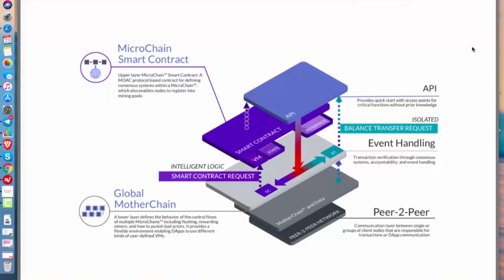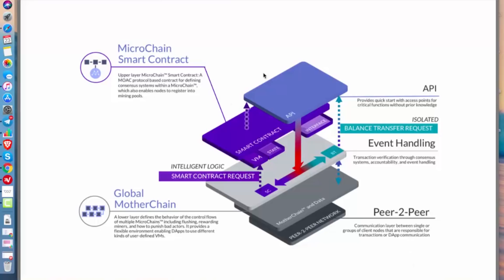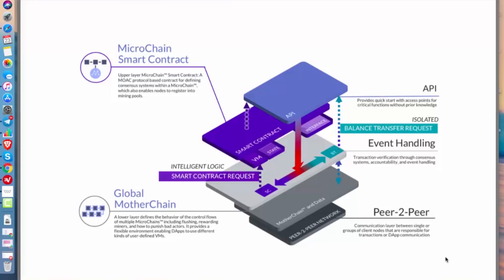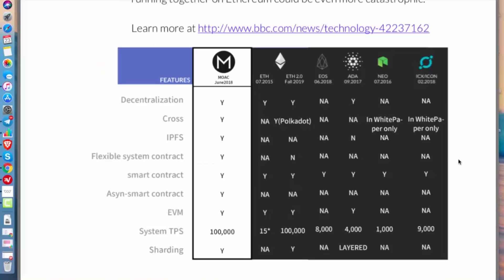The architecture has three elements: a global mother chain, a peer-to-peer communication layer, and the microchain smart contract. The global mother chain is the lower layer that defines behavior and control flows of multiple microchains, including rewarding miners and punishing bad actors, and provides a flexible environment for user-defined VMs. The microchain smart contract is the upper layer — a MOAC-protocol-based contract for defining consensus systems within a microchain. The peer-to-peer layer handles communication between client nodes for transactions or dApp communication.